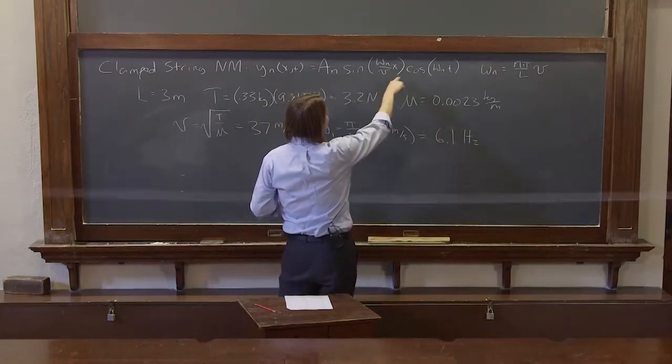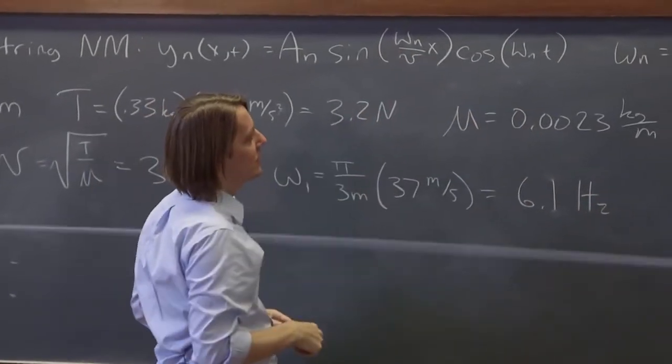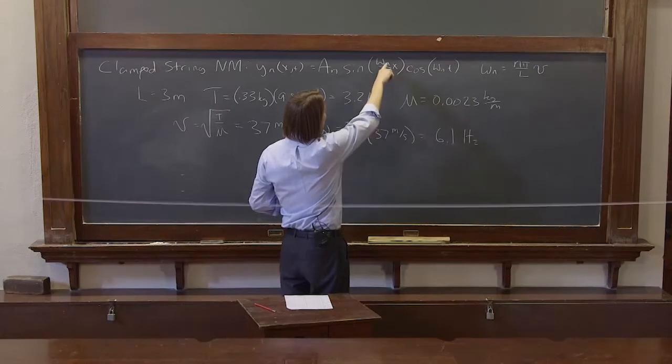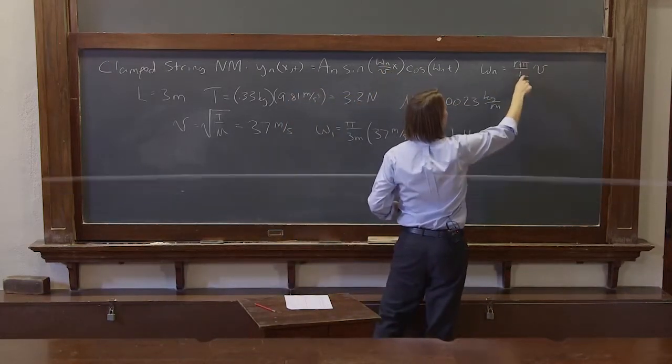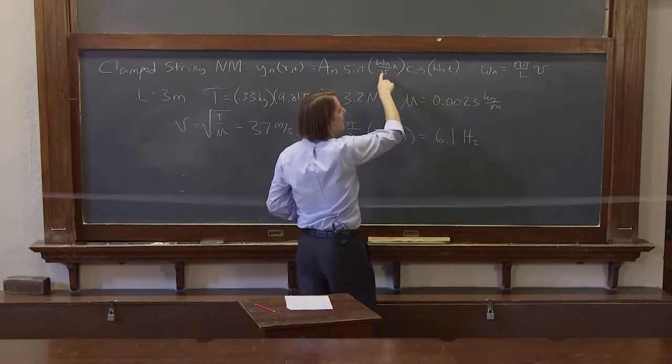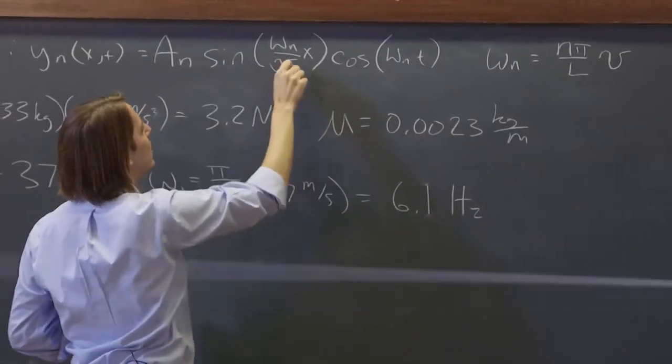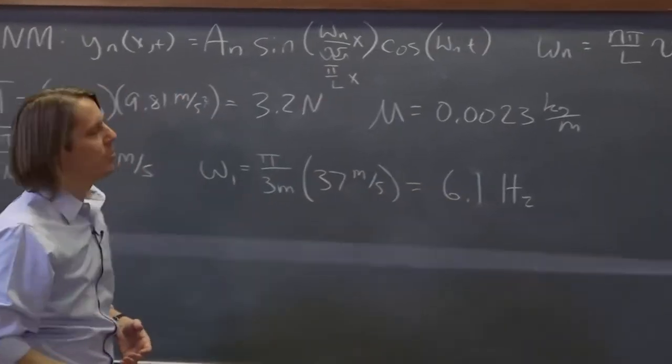The shape of the normal mode comes from the space function here, omega_n over v times x. So we think, what should that shape look like? This is omega_n over v. Well, we're at omega_1. Omega_1 is pi over L v. So you say pi over L v over v. I'm sorry, pi over L v over v is just pi over L.